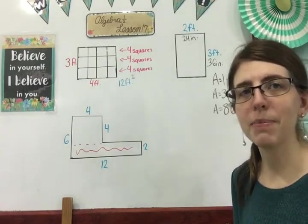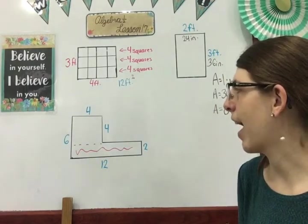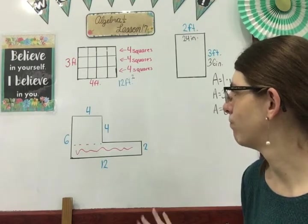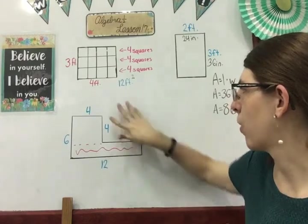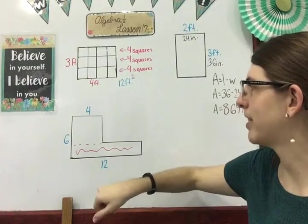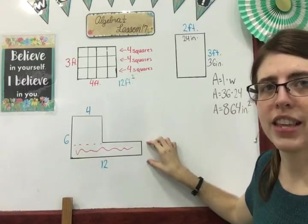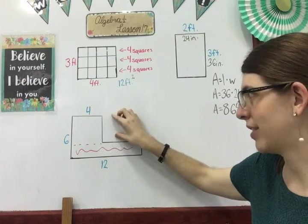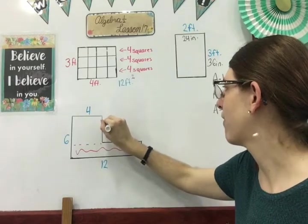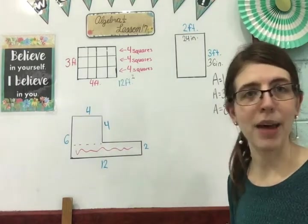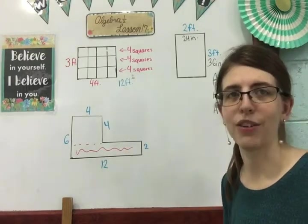It does not matter where you want to separate it for this particular one. Sometimes it will matter only because you won't necessarily have enough information. So let's say I did not have this two here or this four here. I wouldn't want to separate it like this because I wouldn't know exactly how much this piece was or how much this piece was. So it only will matter if you are missing some information. But since I have plenty of information for this one, it does not matter where I choose to separate my rectangles. I'm going to separate it like this for now.